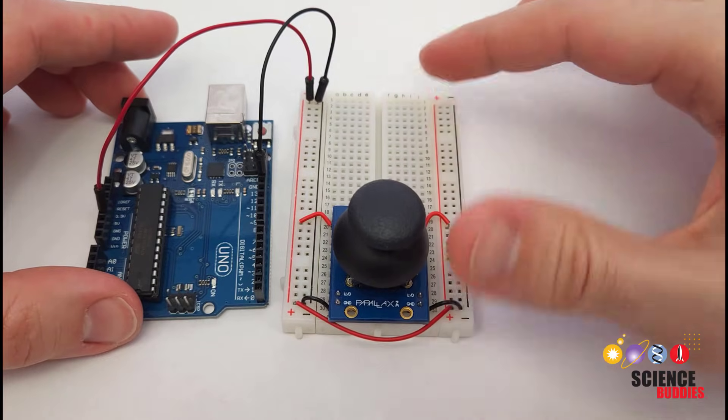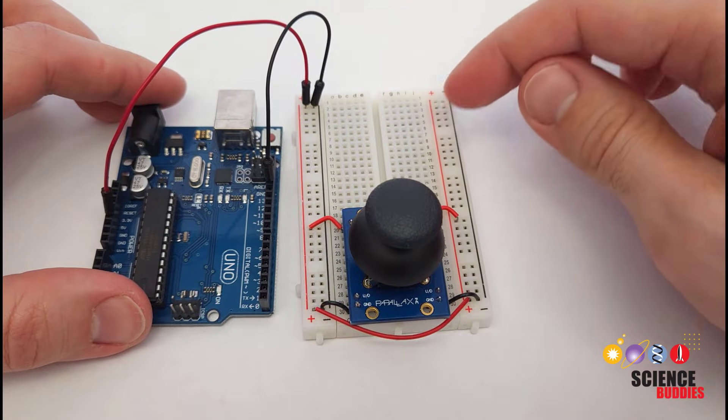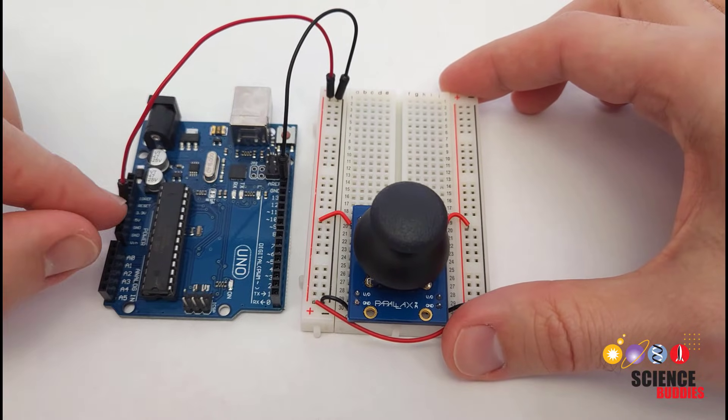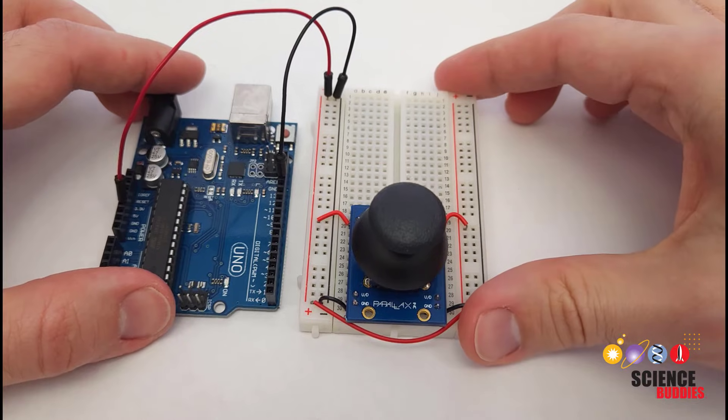Next up, let's take a look at the wiring on the breadboard and connecting to our Arduino. If you don't know how a breadboard works, we have a separate video about that linked in the description of this one. So we have 5 volts and ground from the Arduino connected to the breadboard's power and ground buses.